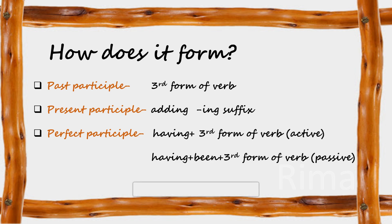The second one is present participle. It is formed by adding the -ing suffix to the end of the base verb. For example: going, writing, receiving, learning, studying, eating, etc. It is the fourth form of the verb.